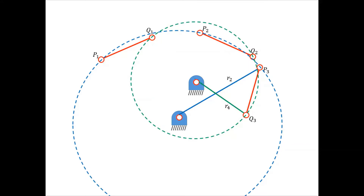This video will discuss graphical linkage synthesis. What do you do if you want to move a four-bar linkage through certain positions? Say you want the coupler — this red link — to touch two or three certain positions. How do you know how to design the linkage: how big the links need to be, and where the ground points need to be? We're going to learn how to do that graphically and then discuss a little bit on how to calculate it.